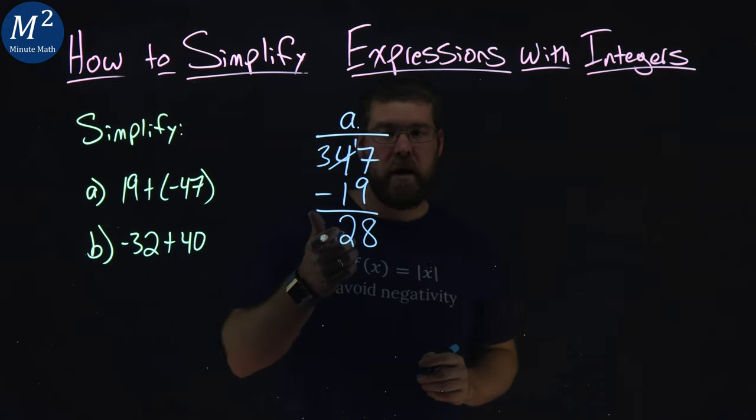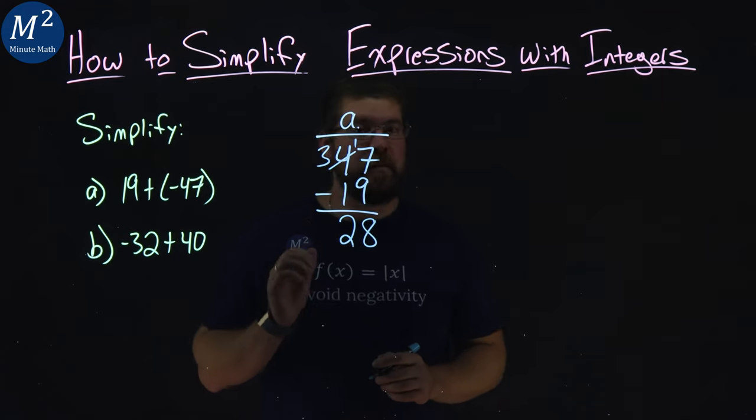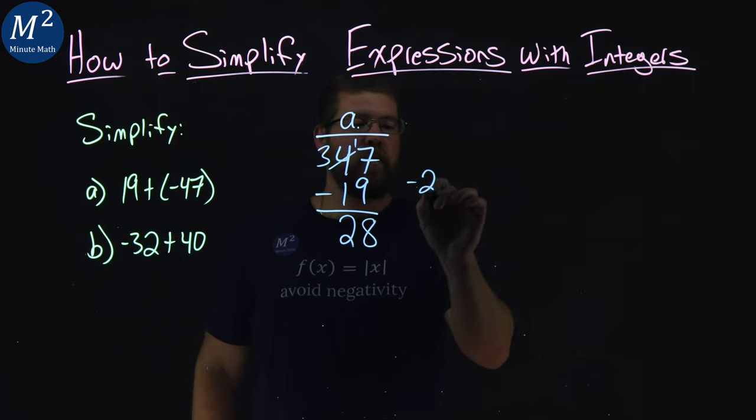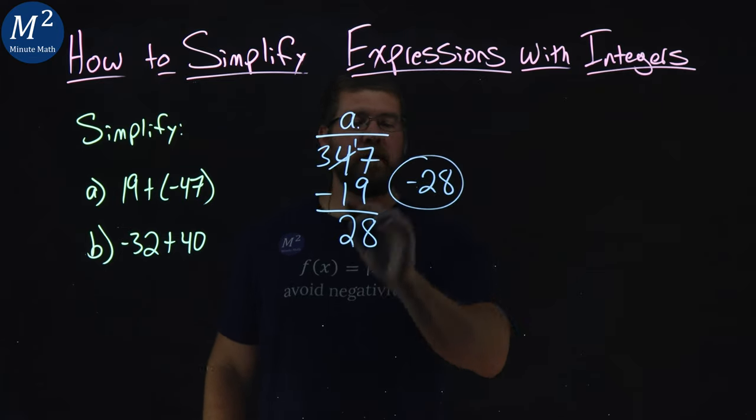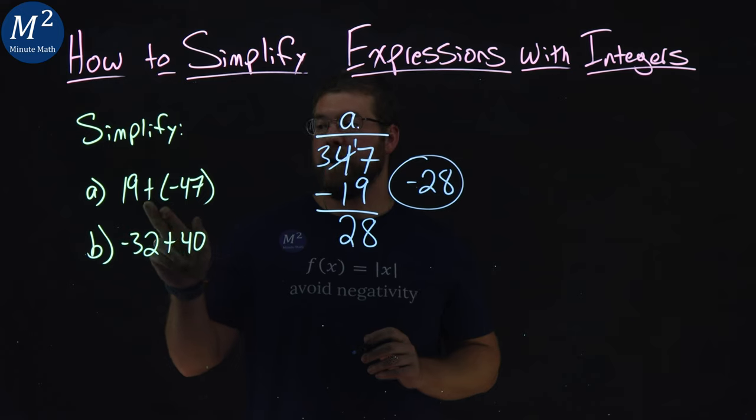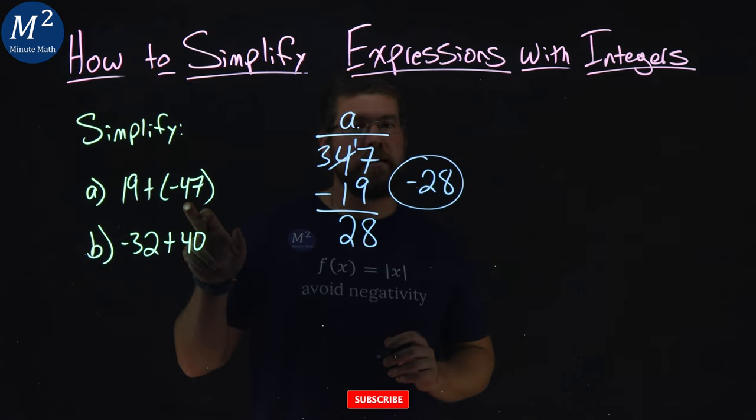Again, now we've got a positive 28, but remember, it needs to be a negative. So we have a negative 28 here as our answer for part A when we simplify. 19 plus a negative 47.